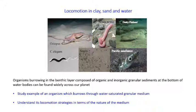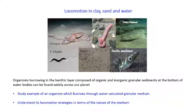Locomotion in the benthic layer — basically at the bottom of the ocean or water bodies — is found all across the planet. You can see examples such as octopus burying into sandy bottoms, or Pacific sand lances diving into the sand. These organisms are very complicated, so we are going to focus on Lumbricus worms to examine how they burrow through sand or granular material versus moving in water, and what contrasting strokes they use in the two mediums.